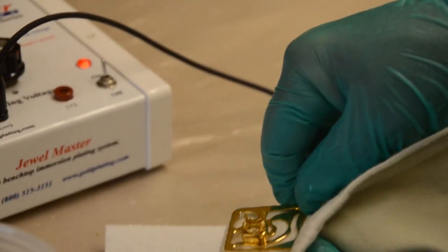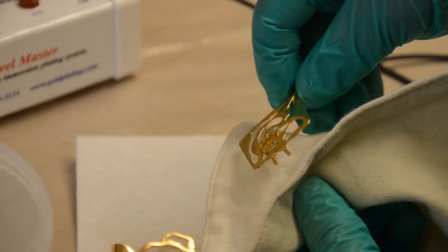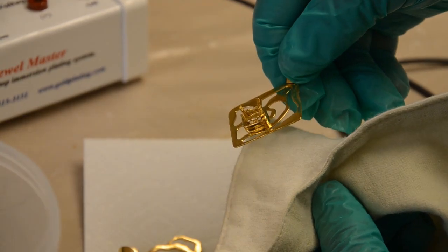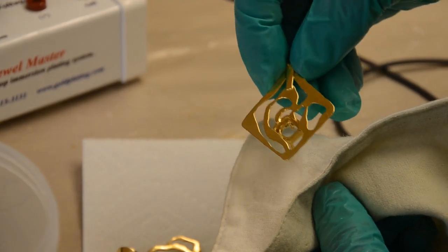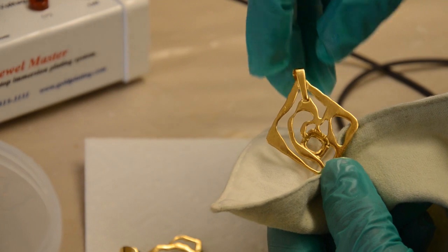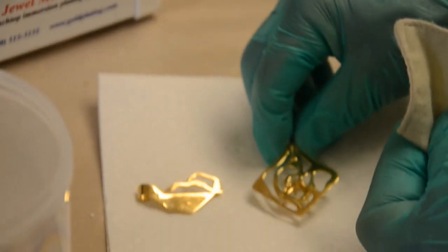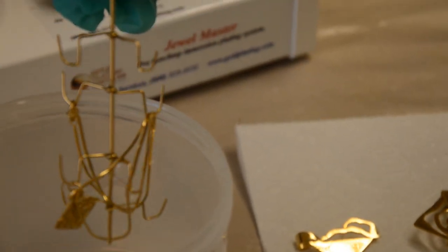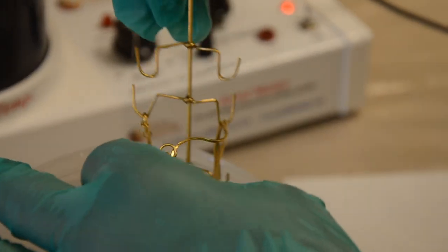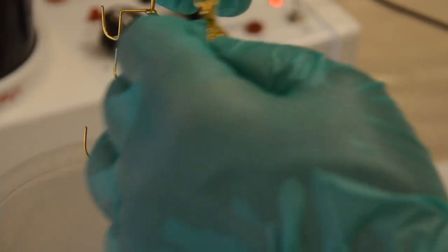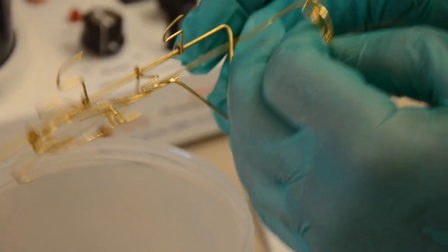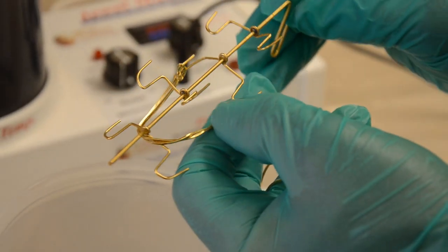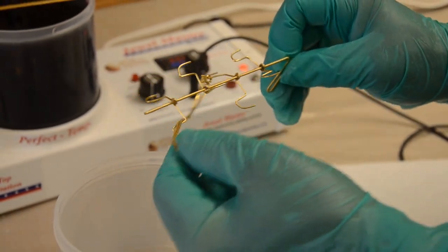You can see everything plated down into the, looks like this artist put some kind of a bezel to hold a stone. That's going to be a nice looking pendant. It's important to note that the quality of the finish, after it's gold plated will be exactly like the quality of the finish prior to gold plating. It won't get rid of any scratches, any dull spots. All of that has to be done with the pre-finishing.